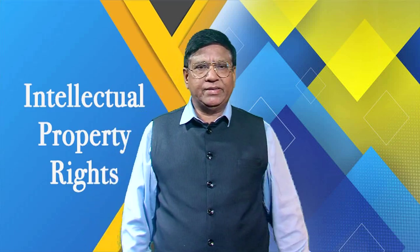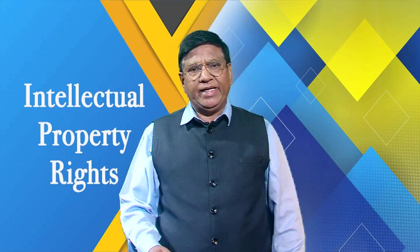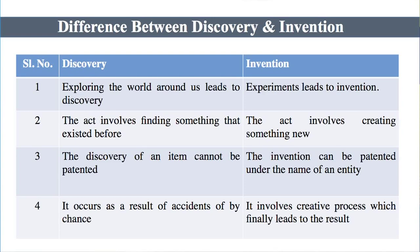The discovery of an item cannot be patented — anything that we discover cannot be patented. While an invention, on the other hand, can be patented under the name of an entity — it could be an individual, a group of individuals, or an organization. Discovery occurs as a result of accident or by chance; sometimes discoveries are made by accident, which is called serendipity. While invention involves a thorough creative process which finally leads to results.